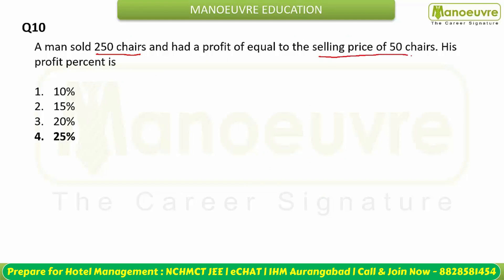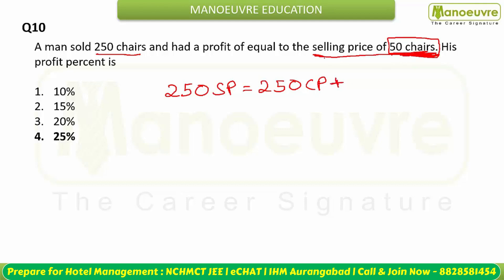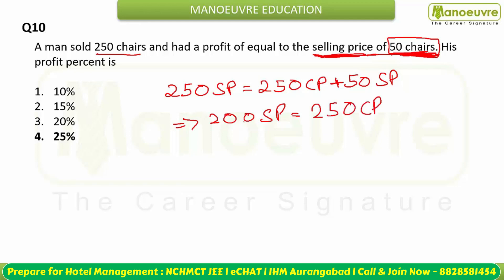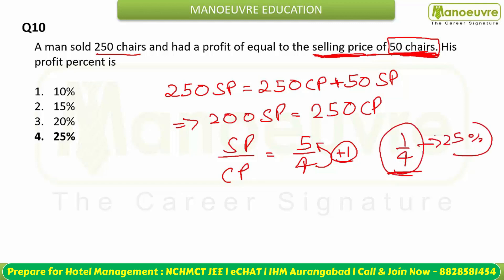A man sold 250 chairs and had a profit equal to the selling price of 50 chairs. So: 250 SP = 250 CP + 50 SP, giving 200 SP = 250 CP. Therefore SP/CP = 5/4, meaning he bought at 4 and sold at 5, earning 1 extra. Profit percentage = 1/4 = 25%.